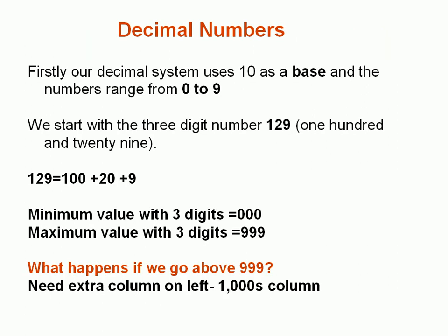Okay, decimal numbers. Now, decimal numbers we should all be familiar with. They're the ones we use day to day. And that's the reason I've chose to talk about them first because I'm going to use them to introduce the concepts that we're going to use when we talk about binary and hexadecimal numbers. Decimal numbers use base 10, which means they've got 10 possible values and those values are 0 to 9. And if we look at a typical number here, we've got a three-digit number, 129. We can write it as 100 plus 20 plus 9, which is 129. The minimum value we have with three digits is 0, and the maximum value we can have with three digits is 999. Now, what happens if we want to go above 999? Well, we need to add an extra column on to the left, and we call this the thousands column.